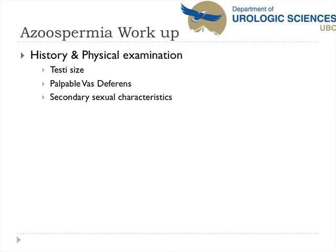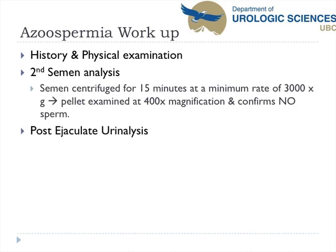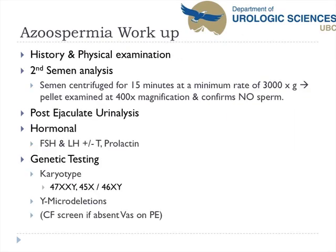On examination you want to look for testicular size — if they're hypogonadal, less than 15 cc's — whether there's a palpable vas bilaterally, and secondary sexual characteristics. Then get a second semen analysis to confirm azoospermia and a post-ejaculate urinalysis to rule out retrograde ejaculation. Hormonal profile will be next: FSH, LH, and sometimes testosterone and prolactin. In an azoospermic patient, genetic testing is also valid — karyotypes for Klinefelter's 47XXY or mixed gonadal dysgenesis 45X/46XY, FISH hybrid analysis for Y microdeletions, and if there's an absence of vas bilaterally, cystic fibrosis testing.